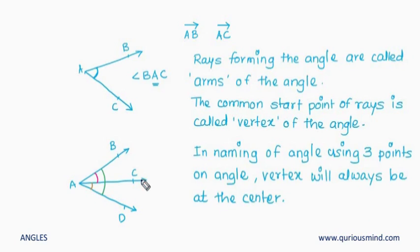So now in this case the pink angle will be called angle BAC, whereas this is angle CAD, and the last one is angle BAD. Observe that the vertex is always at the center.